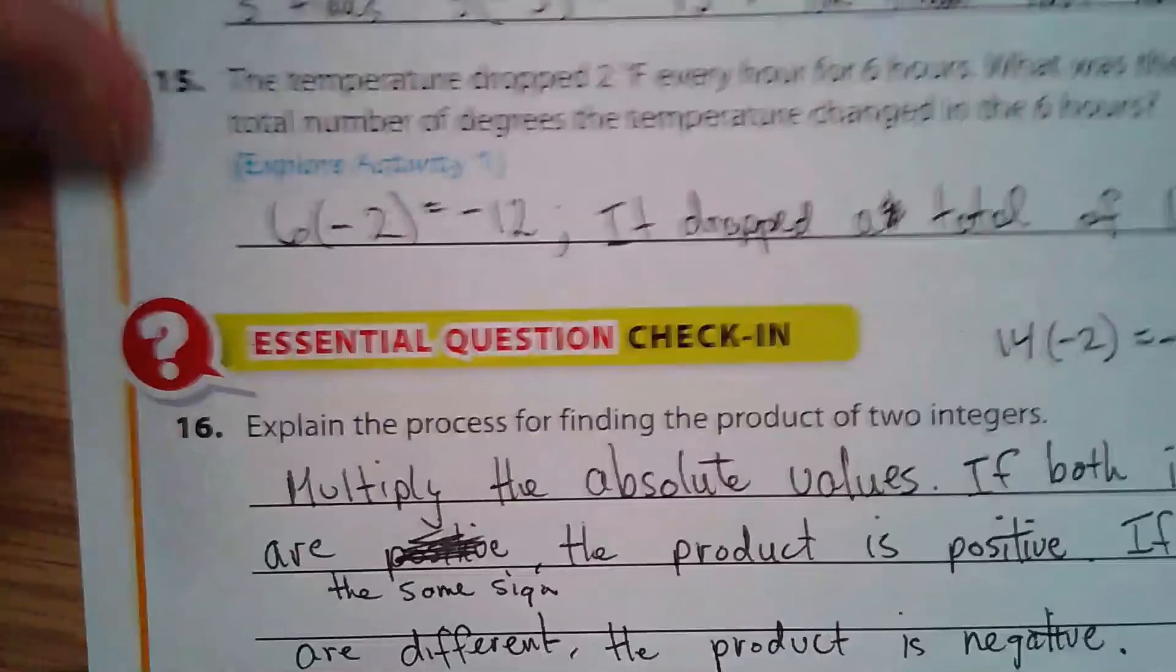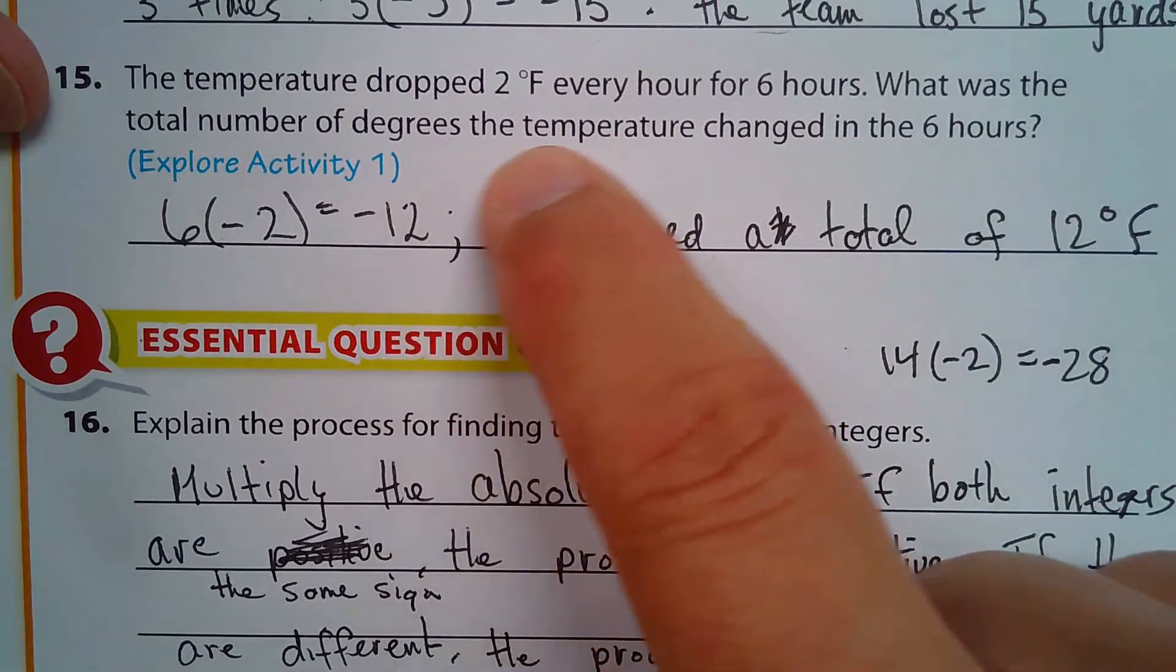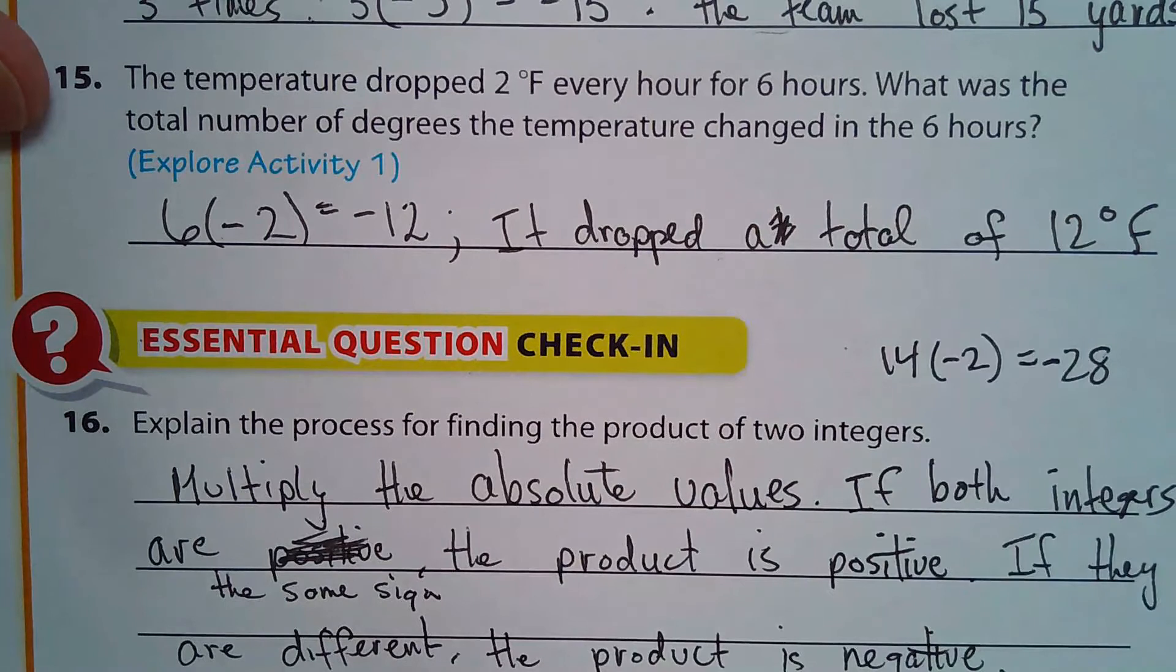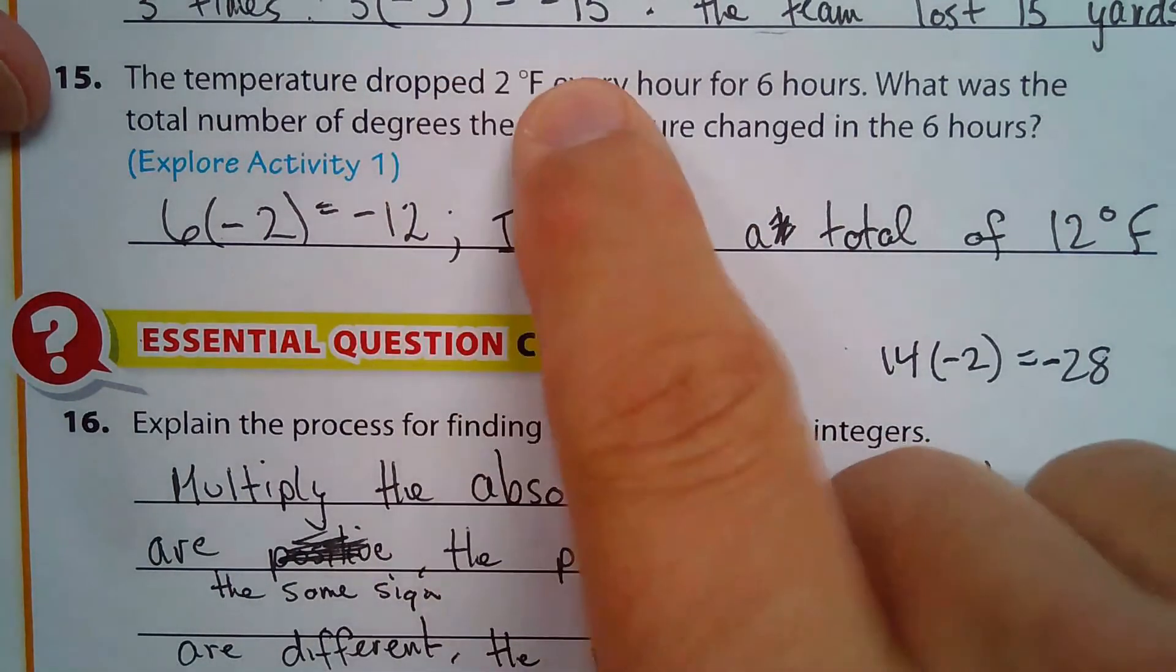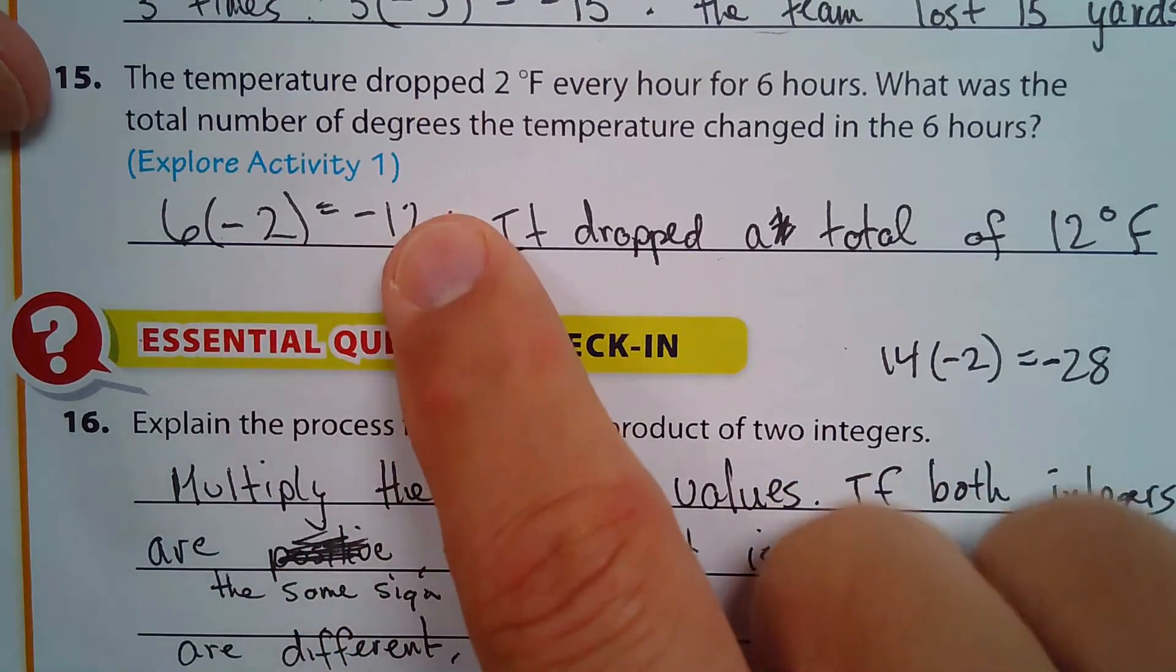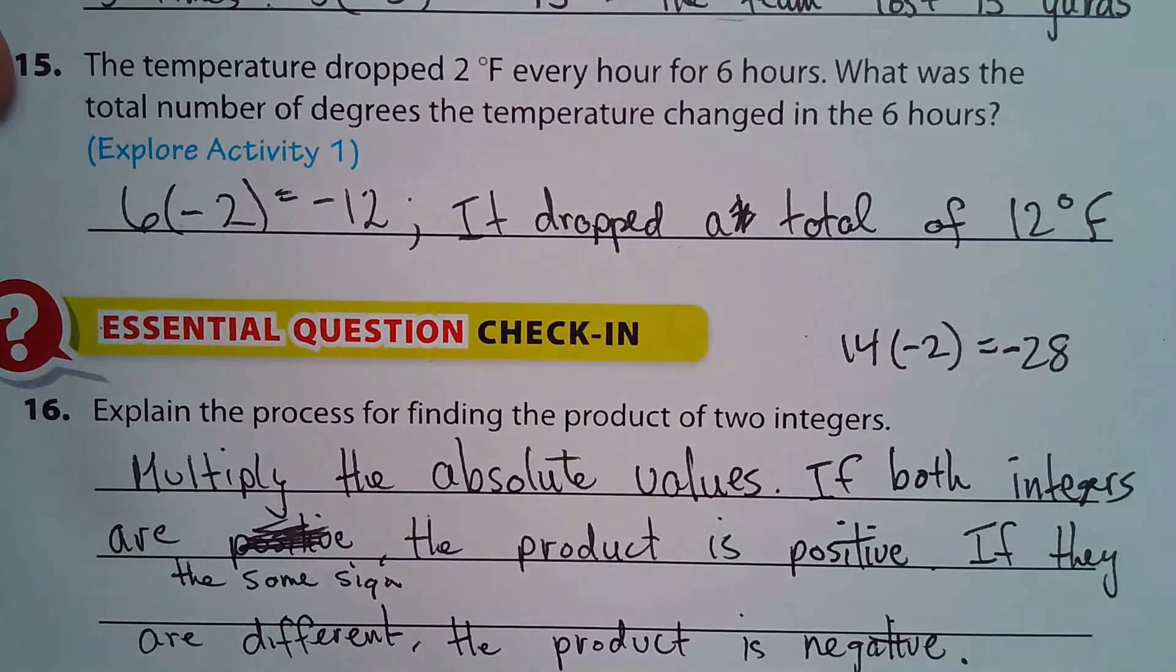And we have this here: the temperature dropped two degrees every hour for six hours. What was the total number of degrees the temperature changed in the six hours? Dropped negative two, six times. So six times negative two is negative 12. So it dropped a total of 12 degrees Fahrenheit.